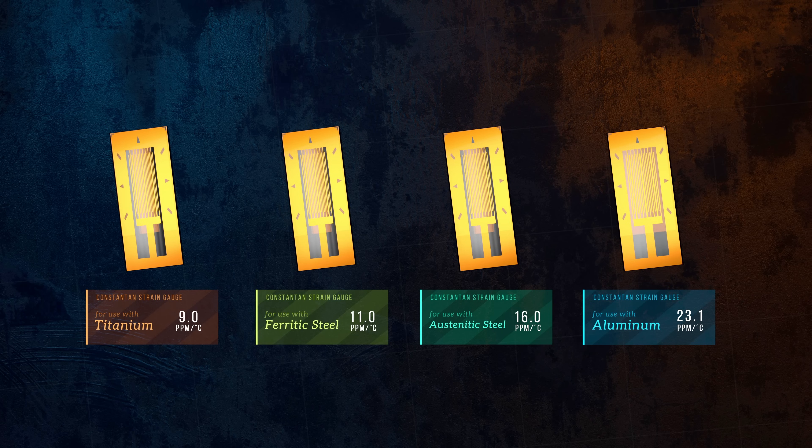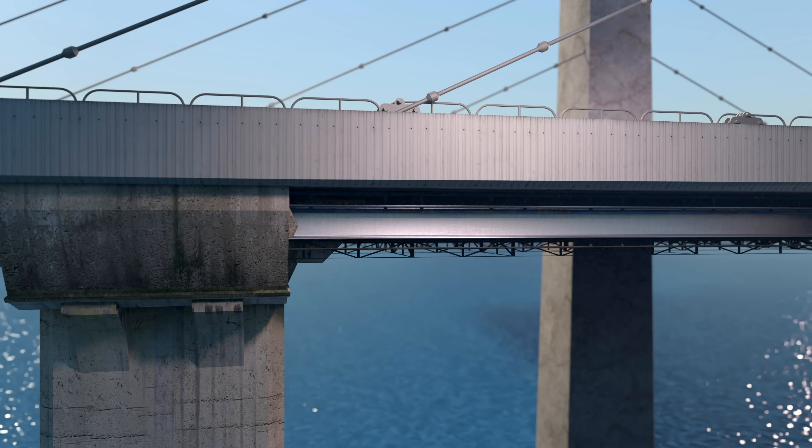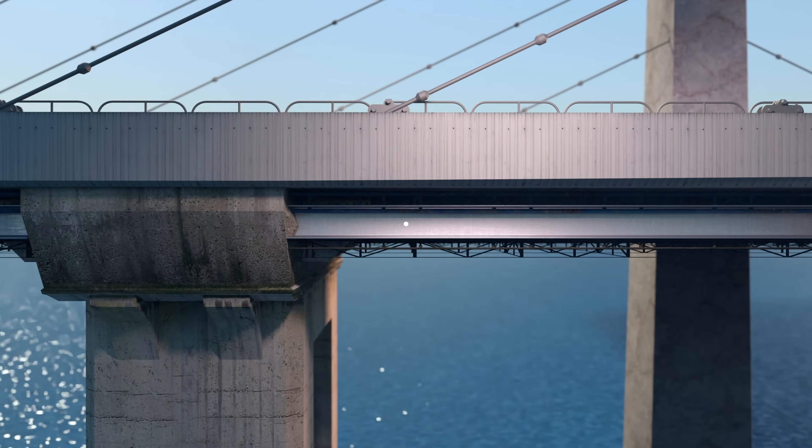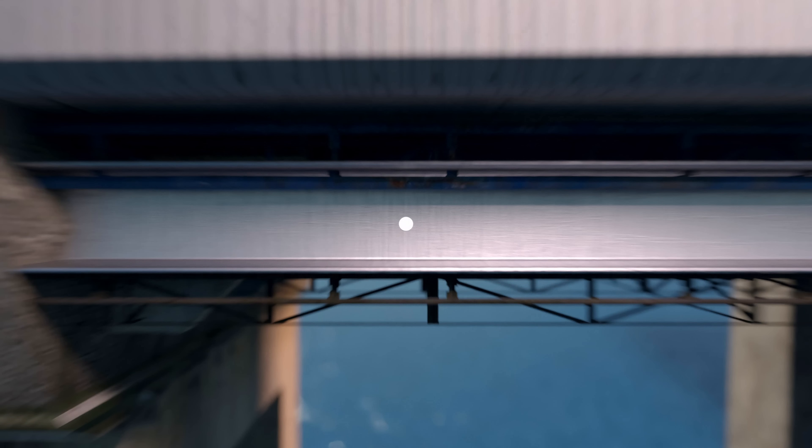Strain gauges have a significant limitation that we haven't discussed yet, which is that they only measure normal strain in a single direction. This is a problem, because the strain at a single point within a body isn't one value, it's actually a tensor quantity. The strain tensor at a point can be represented using a strain element.